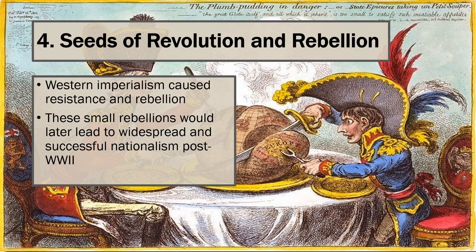Westernization, or the assimilation of Western culture, was often resisted in colonized or dominated areas. In South Asia, for example, Indian soldiers known as sepoys rose up in rebellion against the British East India Company. While the rebellion was brutally suppressed by British soldiers, the effect was the disbandment of the British East India Company and the direct rule of India by the British government, commencing a period now known as the British Raj. Similarly, Westernization was opposed in China by the Boxers, who attempted to rid China of Western influence, especially from Christian missionaries. These independence movements would lead to more widespread and successful nationalism of the post-World War II period.